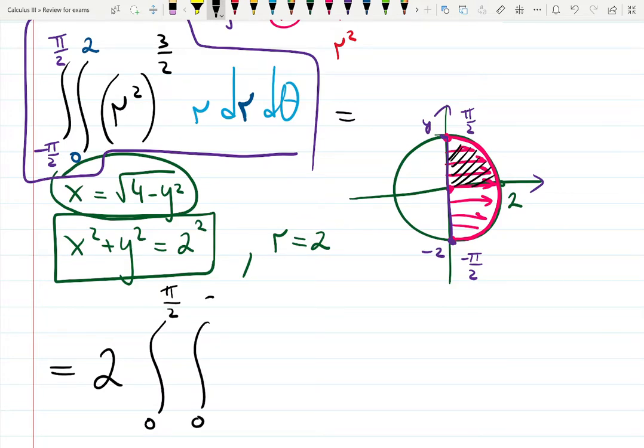And then integral from 0 to 2. Radius squared raised to the 3 halves is simplified to just r cubed times r dr d theta.